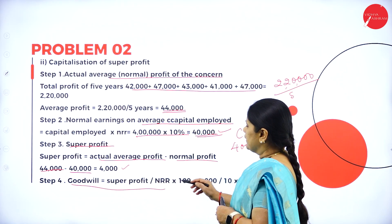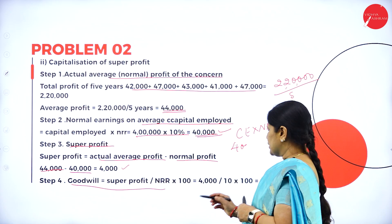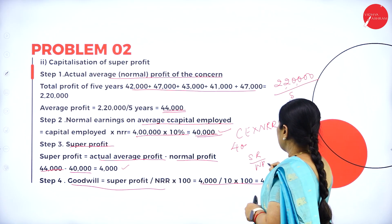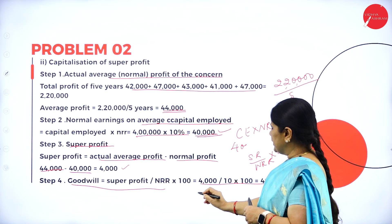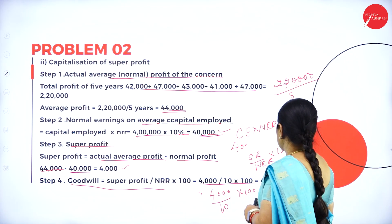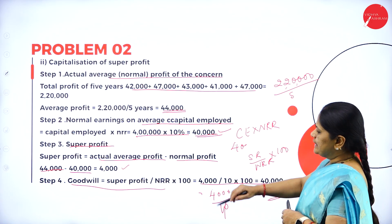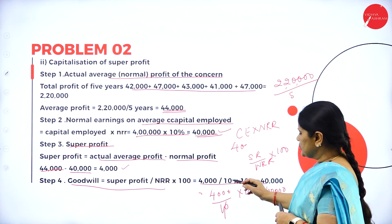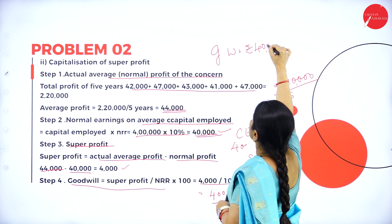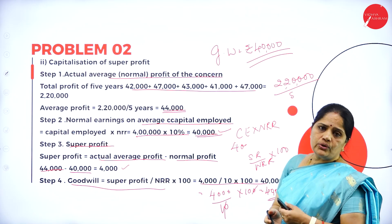Goodwill equals super profit divided by NRR, multiplied by 100. So 4,000 divided by 10, multiplied by 100 equals 40,000. So goodwill equals Rs. 40,000. Whether you calculate using the average profit method or the super profit method, the goodwill remains the same.